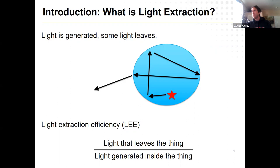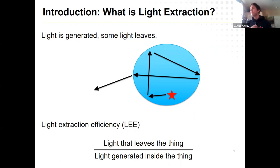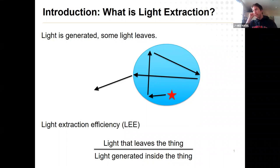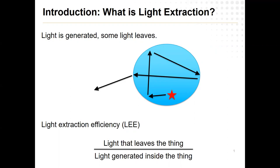We want to get light out of that thing. So just imagine in an abstract sense: you have a blob of something, and there are photons being emitted somewhere inside of it. They will bounce around and possibly get absorbed again, or eventually get out and radiate into the environment. So we'll define — just as you have light trapping efficiency — light extraction efficiency as the total energy that leaves the thing divided by the energy actually generated inside.